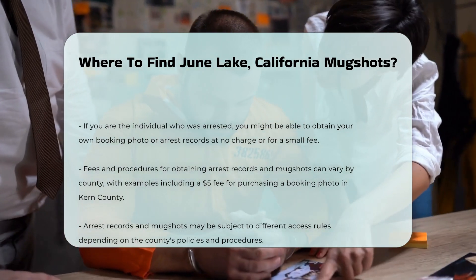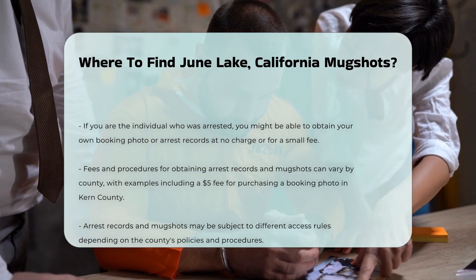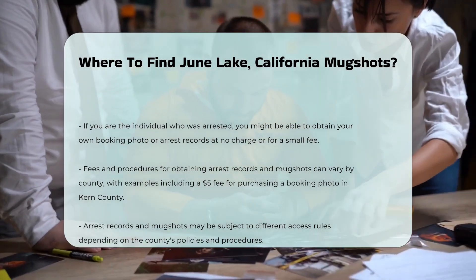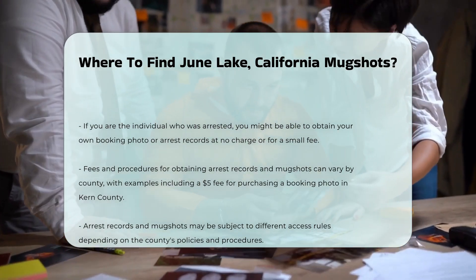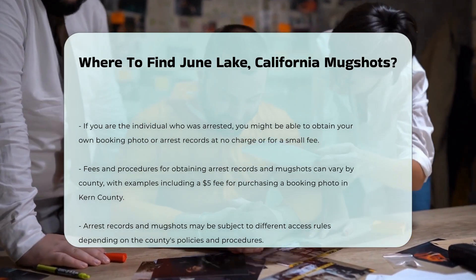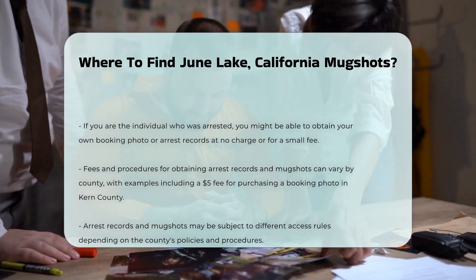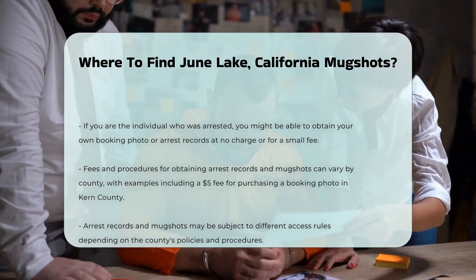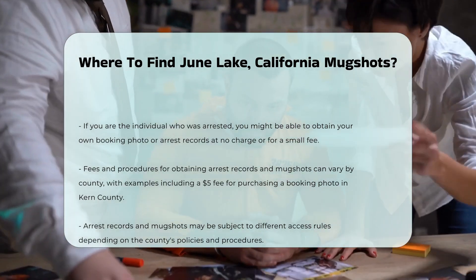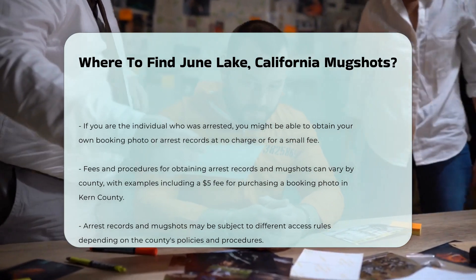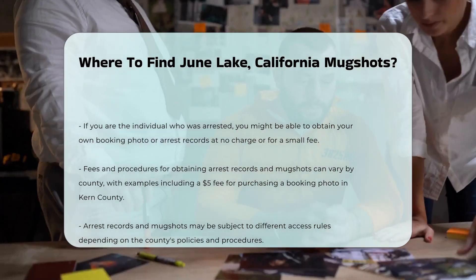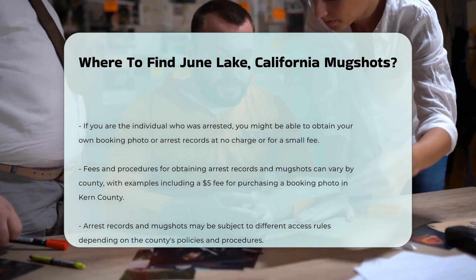If you are the individual who was arrested, you might be able to obtain your own booking photo or arrest records at no charge or for a small fee. For example, in Kern County, there is a $5 fee for purchasing a booking photo. However, the exact fees and procedures can vary by county.